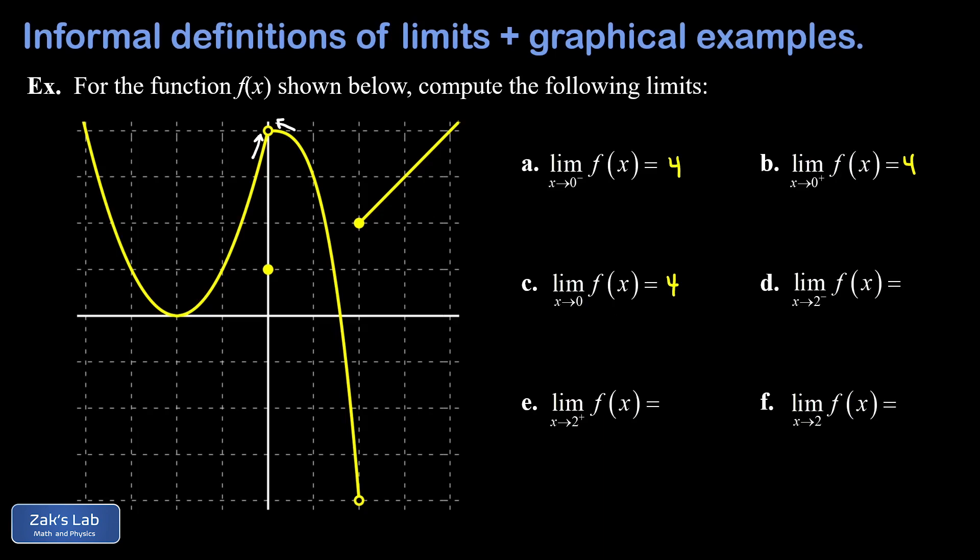Importantly, the limit as x goes to 0 equals 4, but that's not equal to f(0), which is 1. This is actually a formal way of noticing the graph is discontinuous there. If you want to learn more about how continuity is formally defined, I'll post a link to the continuity video.